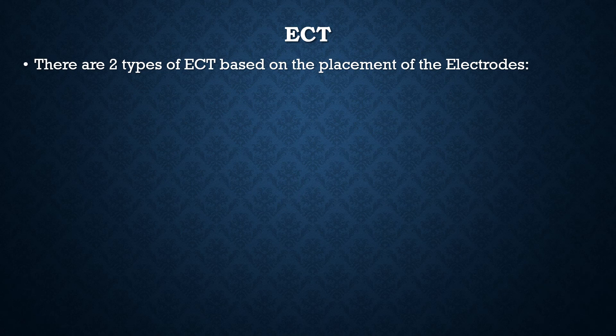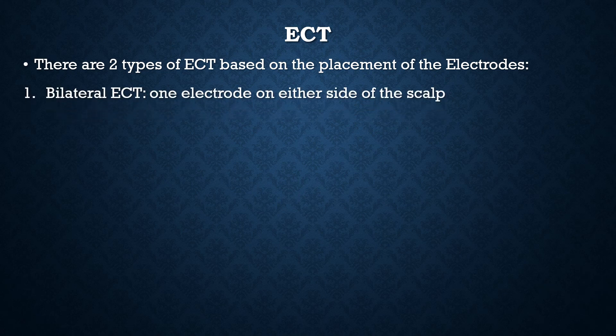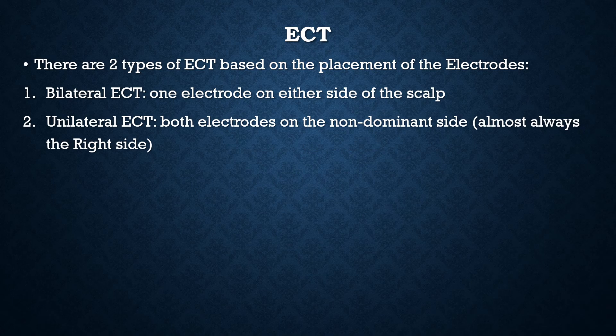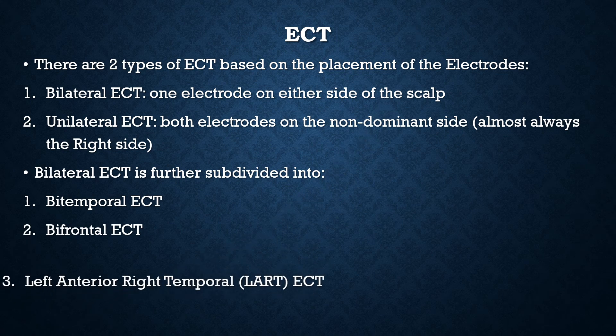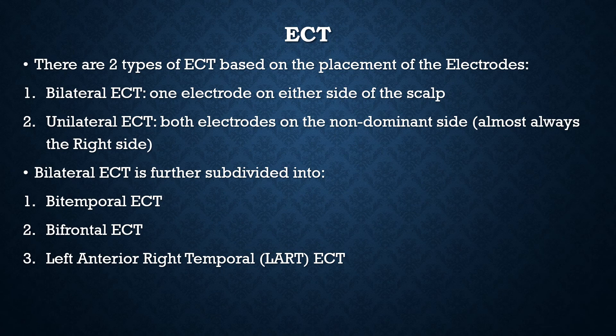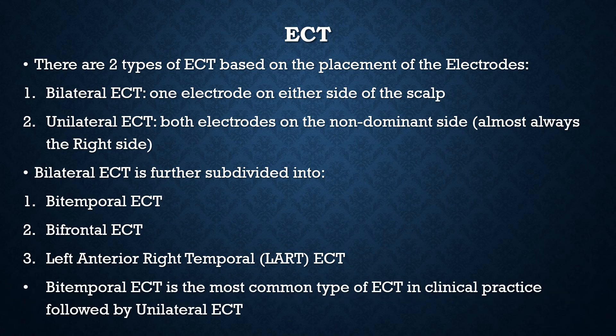There are two types of ECT based on electrode placement. In bilateral ECT, one electrode is placed on either side of the scalp. In unilateral ECT, both electrodes are placed on the non-dominant side, which is almost always the right side. Bilateral ECT is further subdivided into bitemporal ECT, bifrontal ECT, and left anterior right temporal (LART) ECT. In clinical practice, bitemporal bilateral ECT is the most common type, followed by right unilateral ECT.